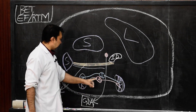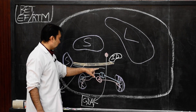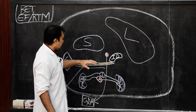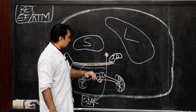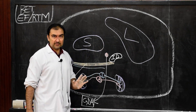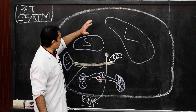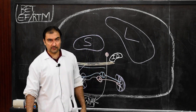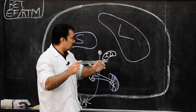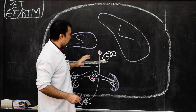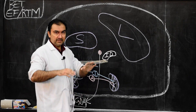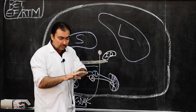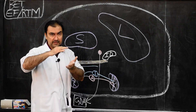Structures labeled: stomach, spleen, left kidney, right kidney, inferior vena cava, abdominal aorta, and the splenic vein. Now we start with the reflections of the peritoneum between the epiploic foramen and the root of the transverse mesocolon. Remember, this cross section is between the epiploic foramen and the root of transverse mesocolon.